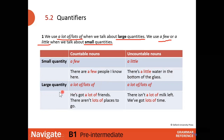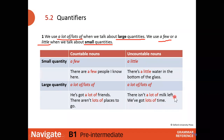For large quantities, we use 'a lot of' or 'lots of.' It doesn't matter whether the noun is countable or uncountable. For example: 'He's got a lot of friends' — 'friends' is countable. 'There aren't lots of places to go' — 'places' is countable plural. 'There isn't a lot of milk left' — 'milk' is uncountable. 'We've got lots of time' — 'time' is uncountable.